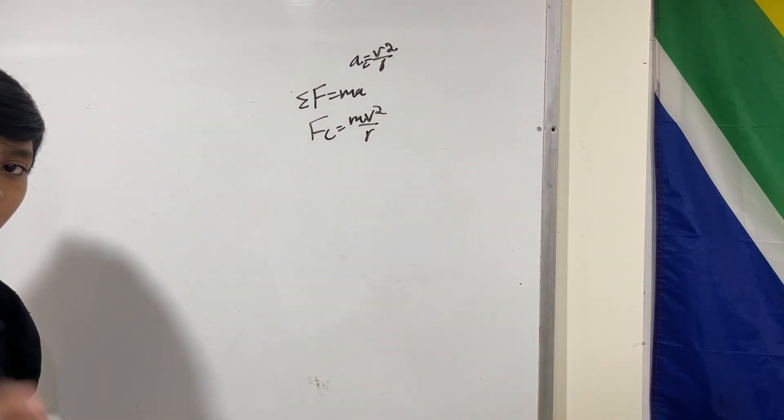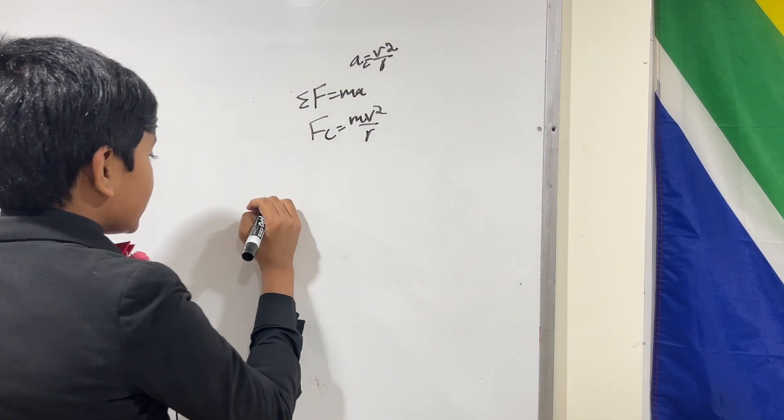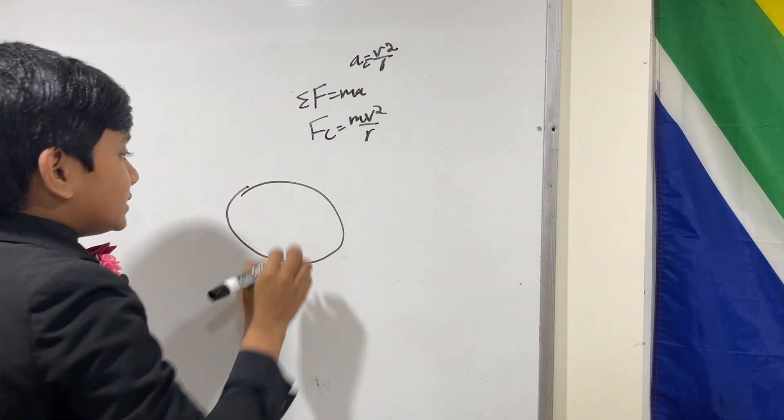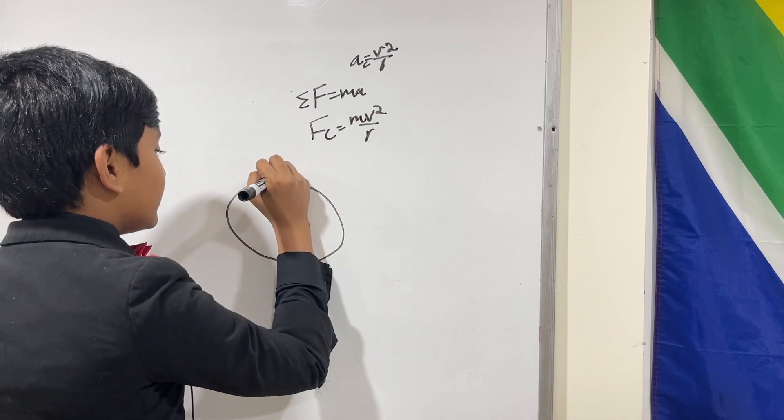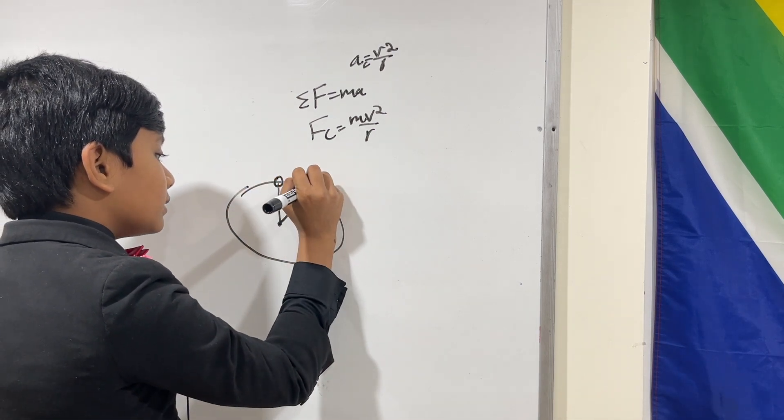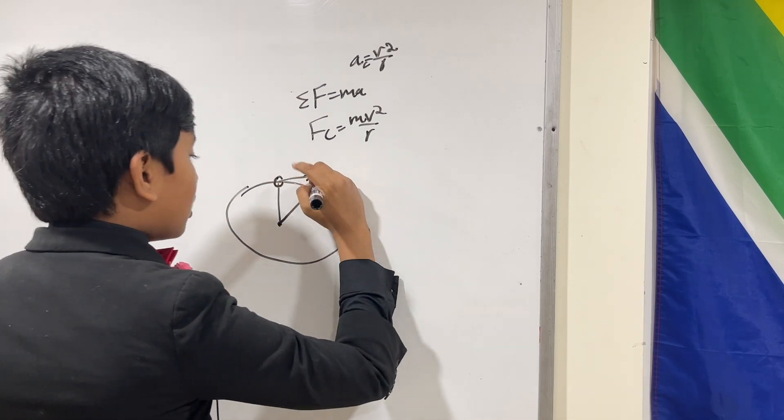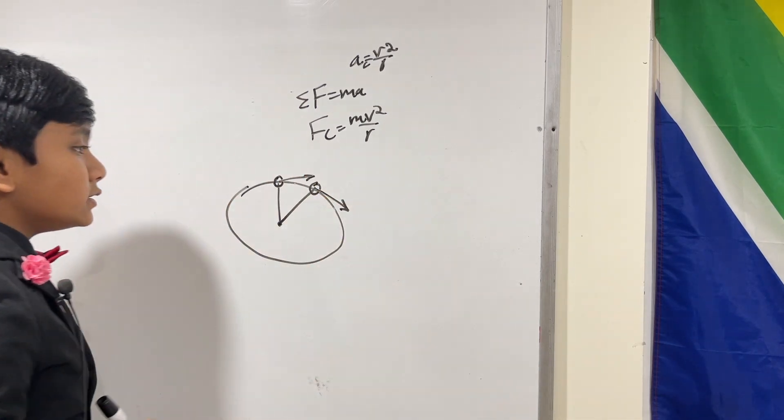And why is it called centripetal force? Because it points at the center. Why does it point at the center of a circular path? Well, let's see. Let's say that the ball is at this point, then the ball is at this point. Now, we all know that the velocity vectors are tangential. So now, let's take v2 over here and add it to v1.